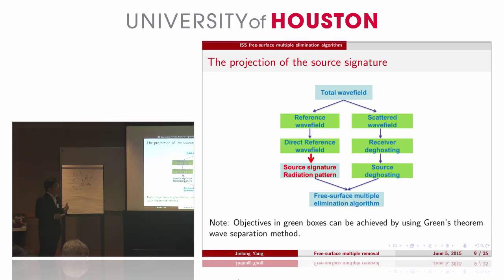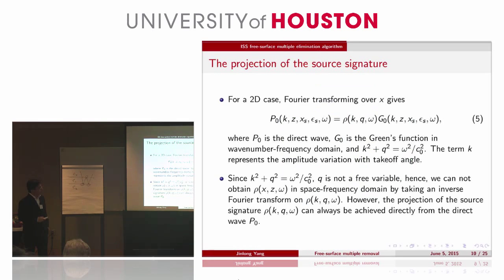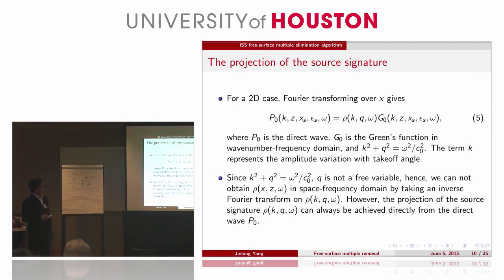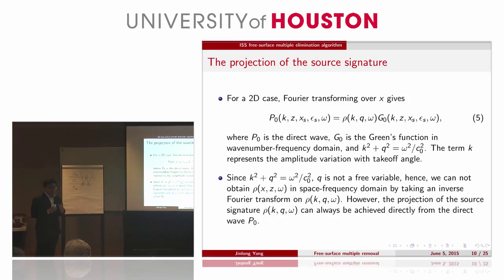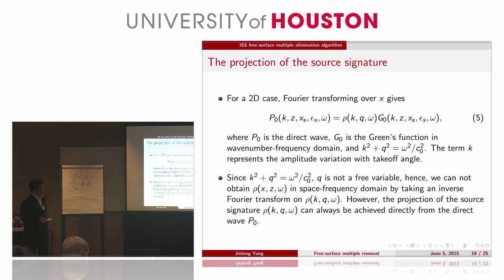I will show you just one example, and if you are interested in the detail, please check my report. For a 2D case, we have a relationship between the direct wave and the source radiating pattern — the projection of the source radiating pattern with the Green's function in K-omega domain. K and Q have a constraint. K represents the amplitude variation with angle. Since we have this constraint, Q is not a free variable, so we cannot find the source in the space-frequency domain. We can only find the projection of the source signature, and it can always be achieved directly from the direct wave.